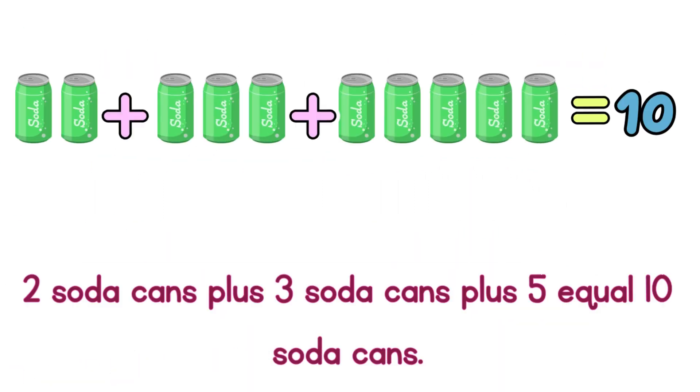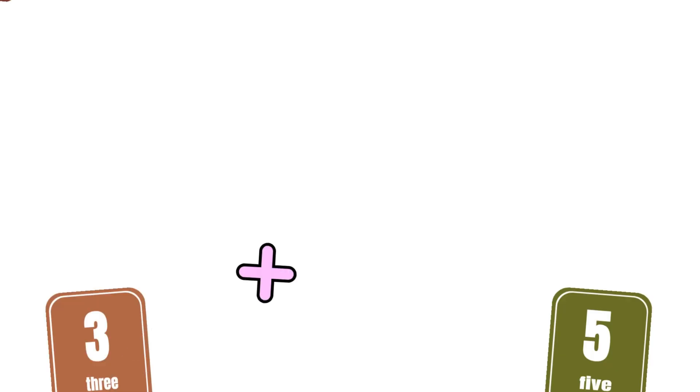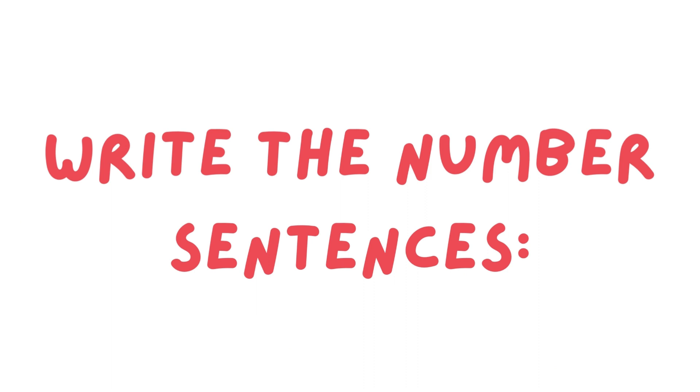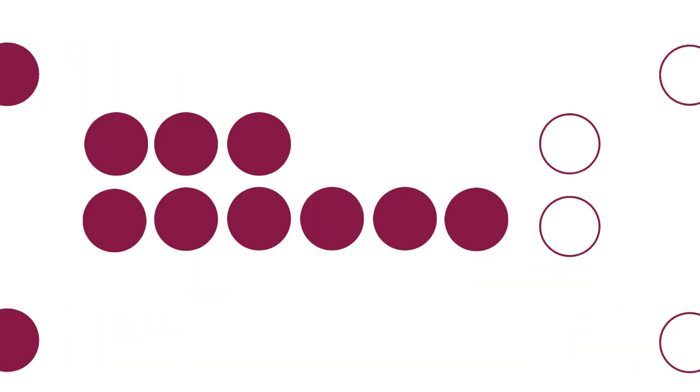2 soda cans plus 3 soda cans plus 5 equals 10 soda cans. 2 plus 3 plus 5 equals 10.